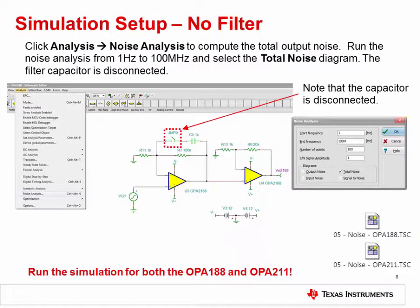The next step is to run a SPICE simulation analysis for the total output noise. Simply open the TINA-TI simulation schematics embedded in the presentation, ensure that the filter capacitor jumper is open, then select Analysis followed by Noise Analysis. Make sure that Total Noise is selected, then run the analysis from 1 hertz to 100 megahertz. Run the simulation for both the OPA188 and OPA211.